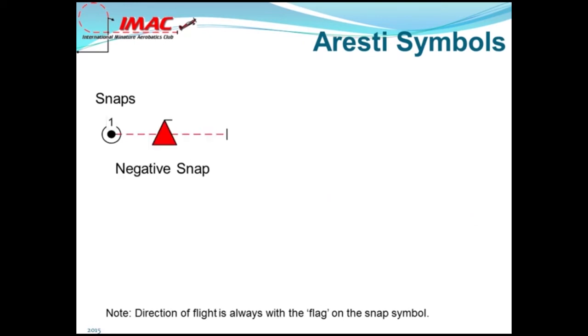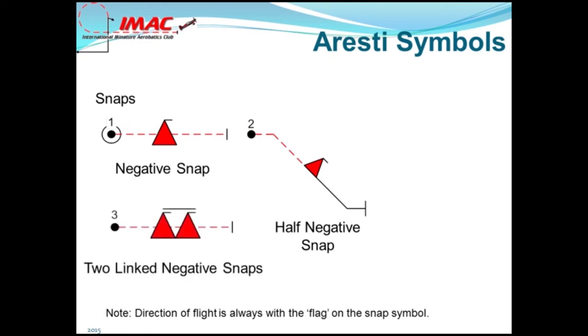Negative snap rolls are shown as a solid triangle. Negative half snaps are drawn as a solid triangle sitting flush with the line. The direction of the flag will be with the direction of flight. Figure three is two linked negative snap rolls.